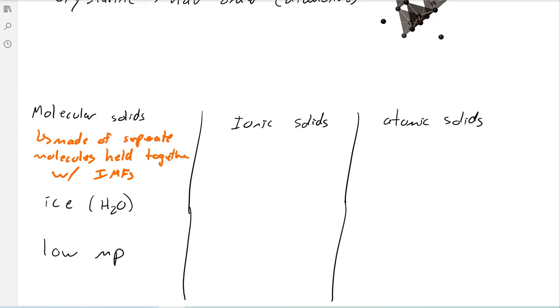But something like dry ice, which is carbon dioxide, has a very low melting point and boiling point as well.